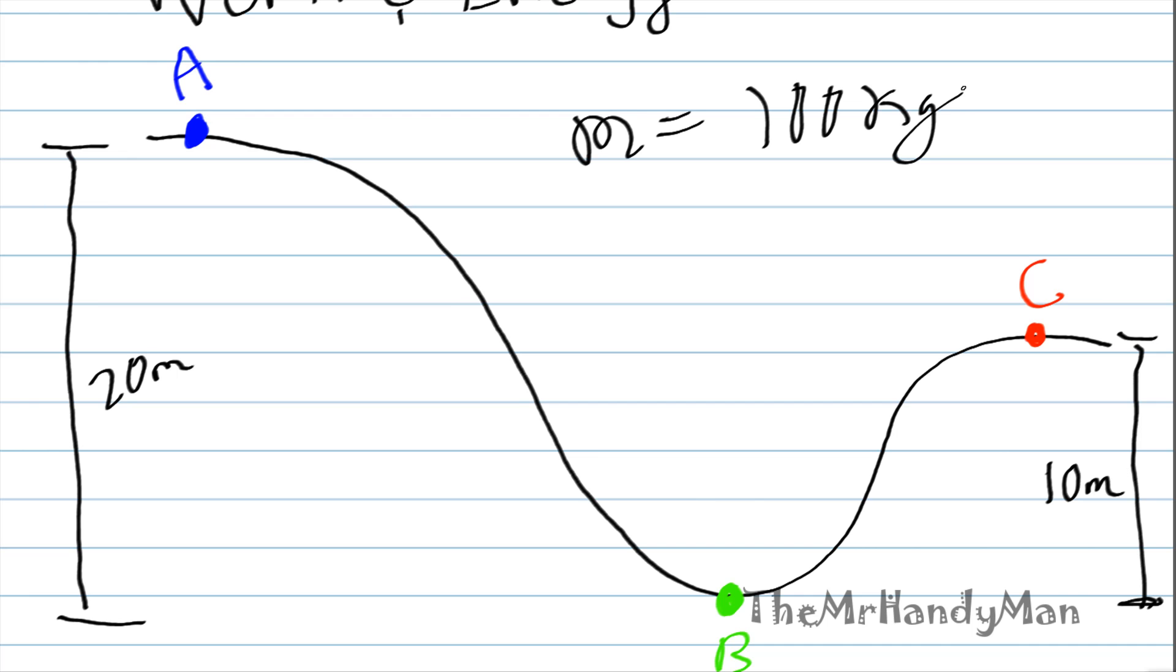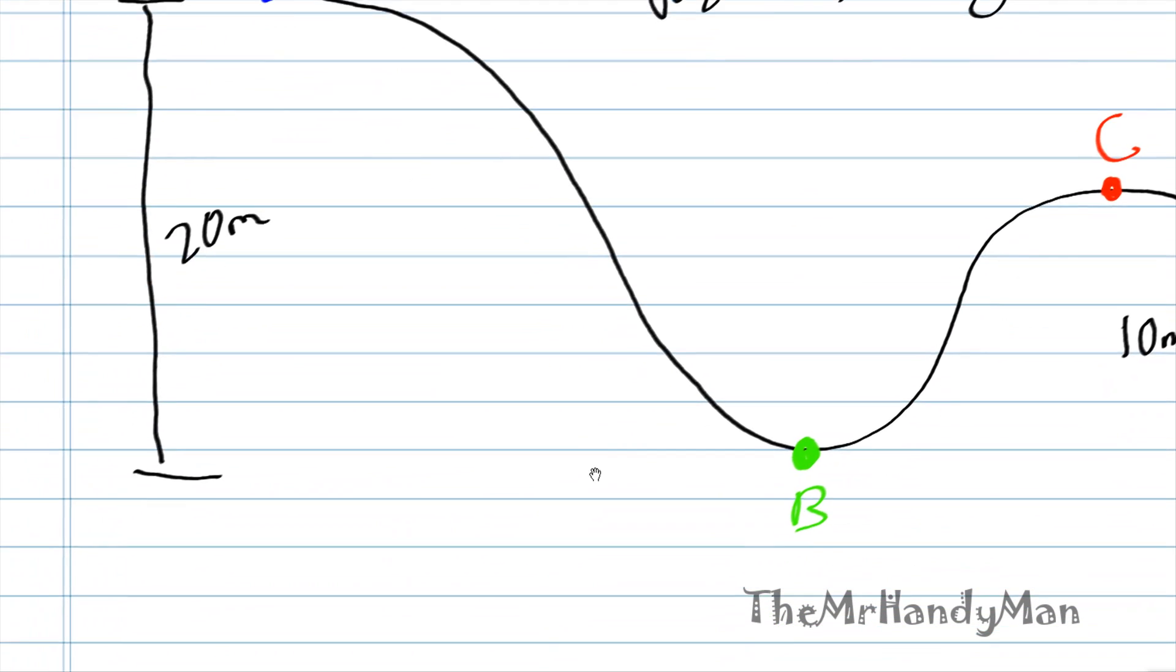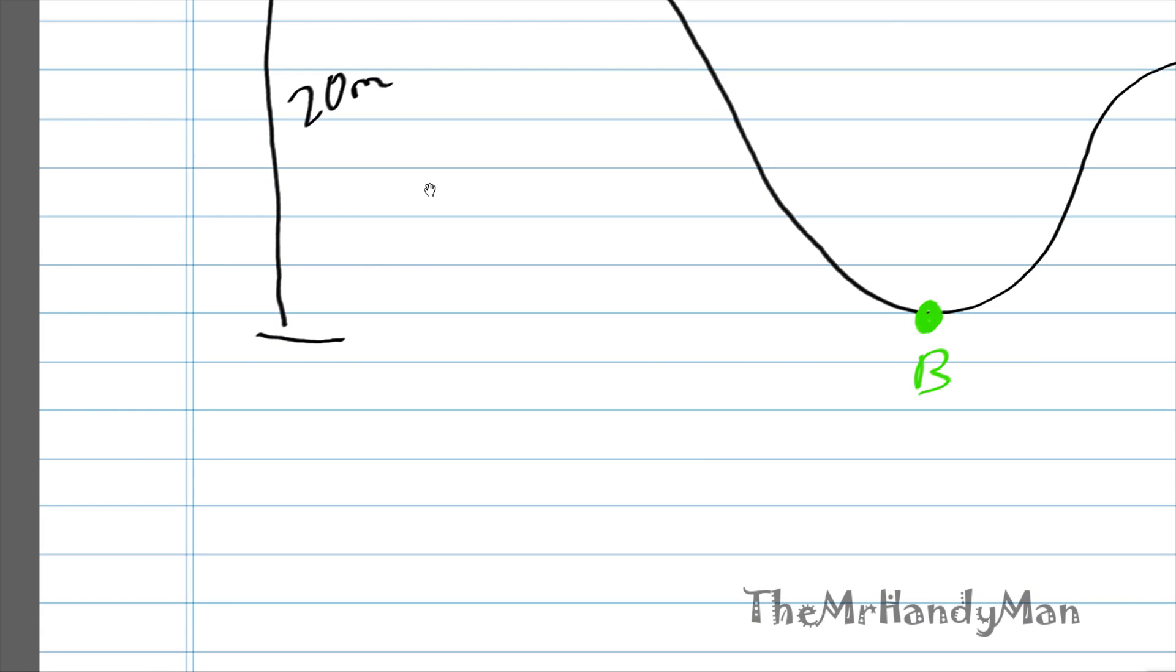So now we know that it equals 100 kilograms. We have this situation. Let's calculate A first. What do we know about A? We know that the velocity at A is equal to 0. We know that the height of A, the Z of A is equal to 20 meters. And we know that we're on Earth, so we know the acceleration and all that.